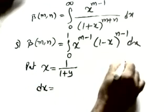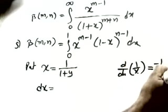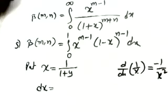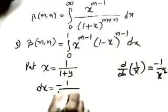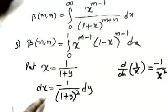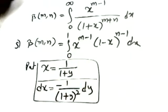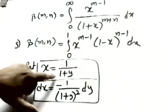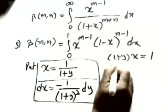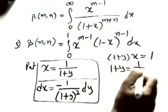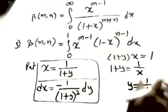Differentiating x = 1/(1+y): dx equals minus 1 divided by (1+y)² dy. Now we also solve for y in terms of x: from (1+y)x = 1, we get y = 1/x - 1. Finding the new limits: when x = 0, y = infinity (lower limit); when x = 1, y = 0 (upper limit).